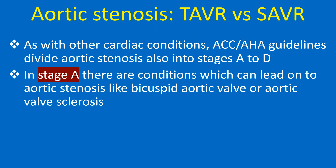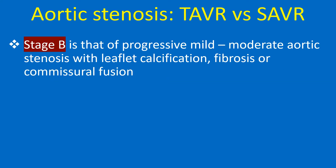As with other cardiac conditions, ACC AHA guidelines divide aortic stenosis also into stages A to D. In stage A, there are conditions which can lead on to aortic stenosis like bicuspid aortic valve or aortic valve sclerosis.